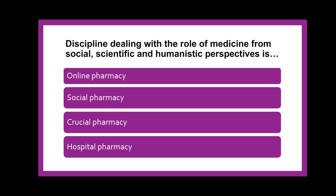The next question is: The discipline dealing with the role of medicine from social, scientific, and humanistic perspectives is dash — whether online pharmacy, social pharmacy, crucial pharmacy, or hospital pharmacy? The correct answer is social pharmacy. The discipline which deals with social, scientific, and humanistic aspects is social pharmacy — as the name suggests, social aspects.